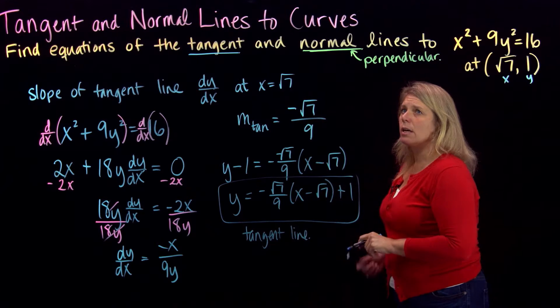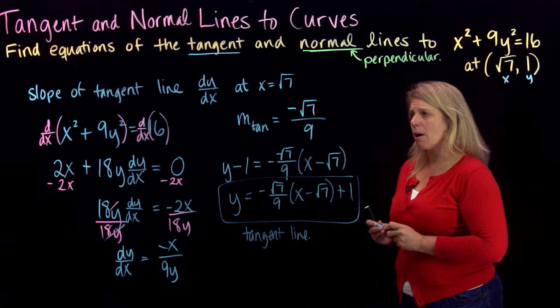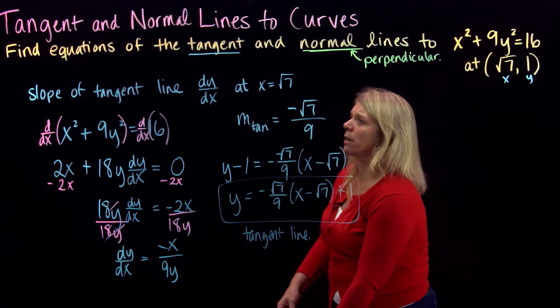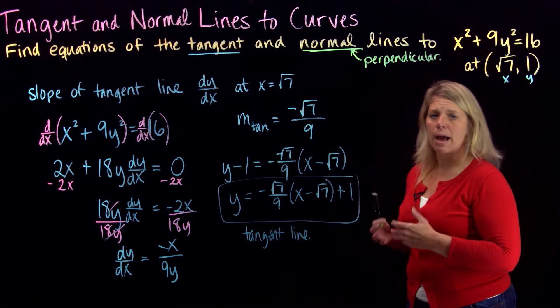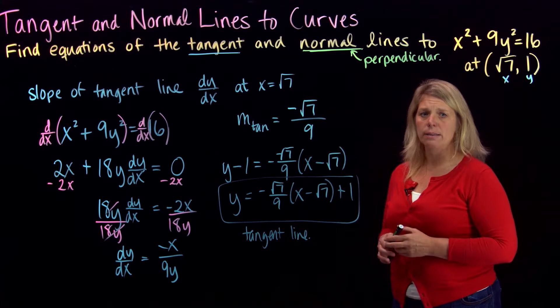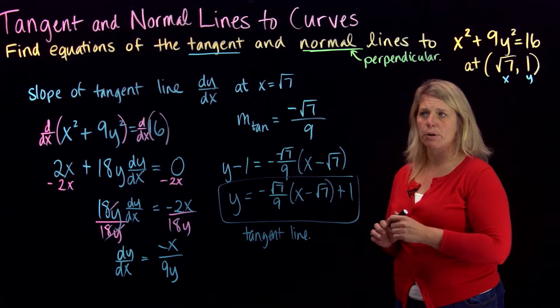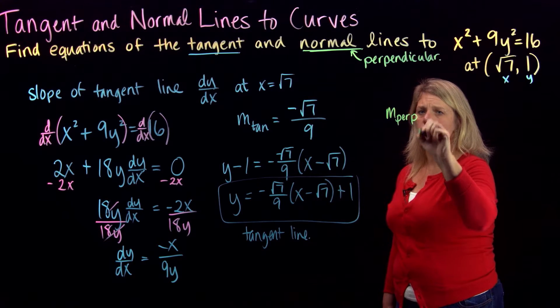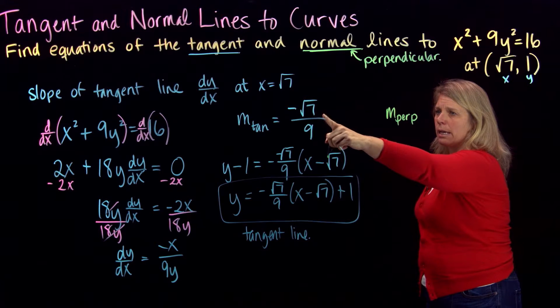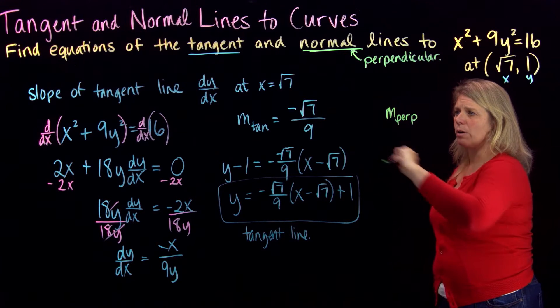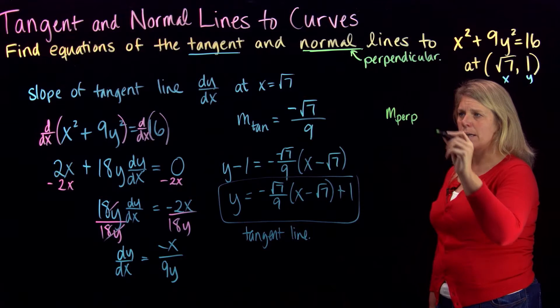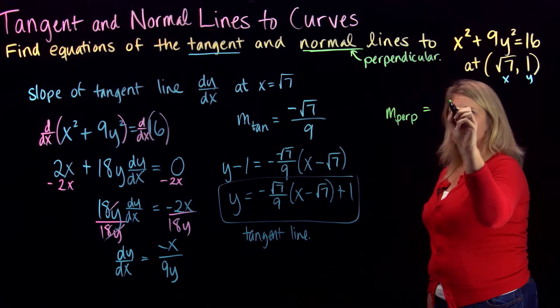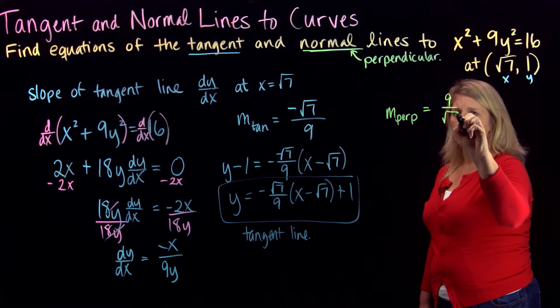And notice it also asks us for the equation of our normal line, and so we don't actually have to do too much more work to get that. We have to remember that slopes of perpendicular lines are opposite reciprocals of each other. So the slope of the perpendicular line, or you could write m normal, is going to be the opposite reciprocal of the slope of the tangent line. So I'll have positive 9 over square root of 7.